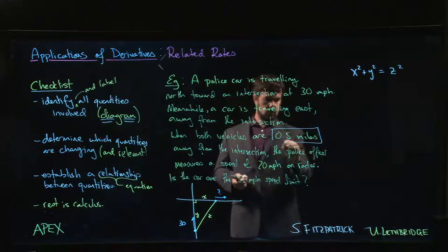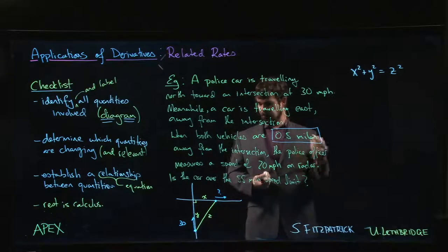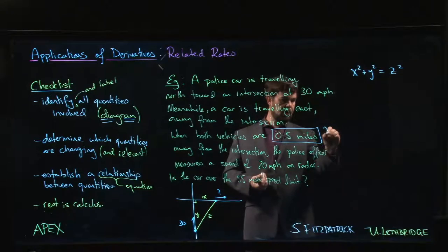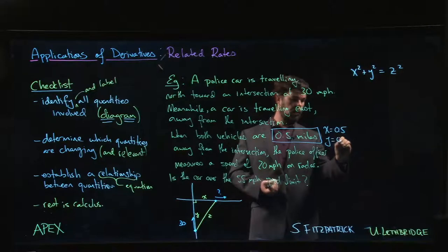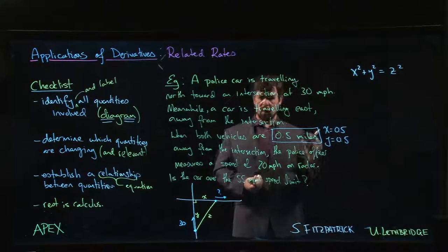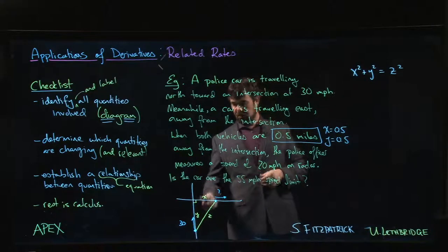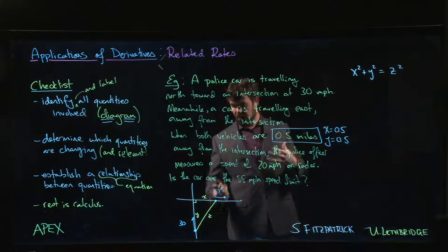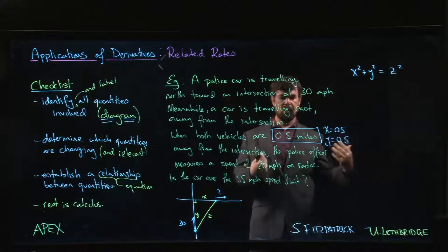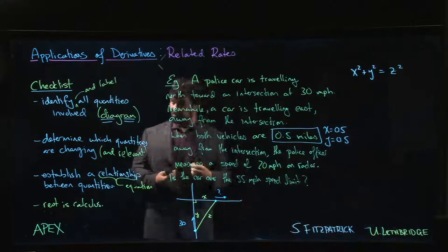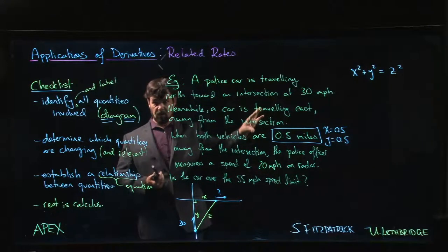Both vehicles are 0.5 miles away, so this is telling us that we're at some point going to be interested in what happens when x = 0.5 and y = 0.5. But those aren't values that we're going to put in at the beginning, because those values are not constant. Both vehicles are moving, so these are changing. At some moment in time, that moment being the moment at which they take that speed measurement, those are going to be the values. So that's going to come into play at some point, but not yet.